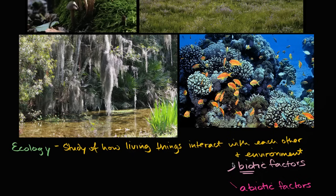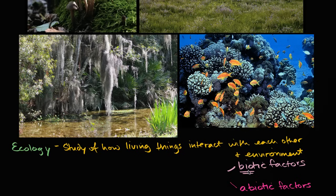Even if you think about yourself as you watch this video, you are in an environment and interacting with it. There are many abiotic factors around you: the air you breathe, the temperature, your access to water. But there are also biotic factors. Even if you think you're in a room alone, there is bacteria around you. There might be a plant in the room, and that plant might be producing oxygen that you breathe, while you produce carbon dioxide which the plant uses in photosynthesis to fix carbon.